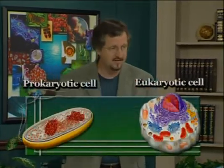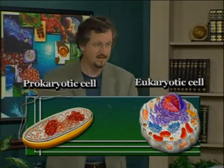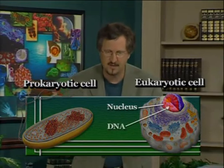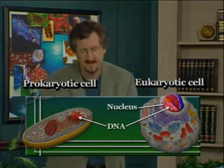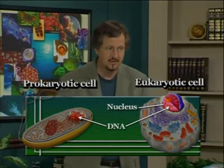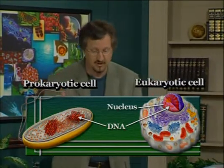But before we do that, I want to spend just a moment locating in the cell where these processes are occurring. You remember from the third lecture that the defining difference between the two main kinds of cells found in nature — prokaryotes on the one hand and eukaryotes on the other — is whether or not they have a nucleus. Eukaryotes have a nucleus and prokaryotes don't. The nucleus is where the DNA in eukaryotic organisms is found, separated from the rest of the cell. Prokaryotic DNA is not segregated in any way. This means that in eukaryotic cells, the processes of replication and transcription must occur in the nucleus, and they do.